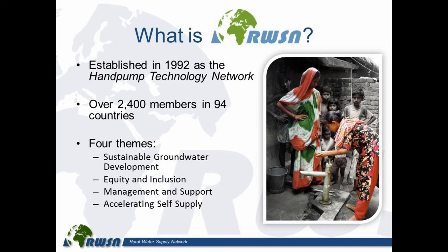We've got four areas that we're interested in during the current strategy period. Sustainable groundwater development looks at hand pump technology, cost-effective boreholes, and water resource management. Equity and inclusion, managed by WaterAid, covers human rights to water, disability access, and water point mapping. Management and support is managed by IRC in the Netherlands, looking at sustainable services. And accelerating self-supply looks at enabling rural households to improve their own water systems.